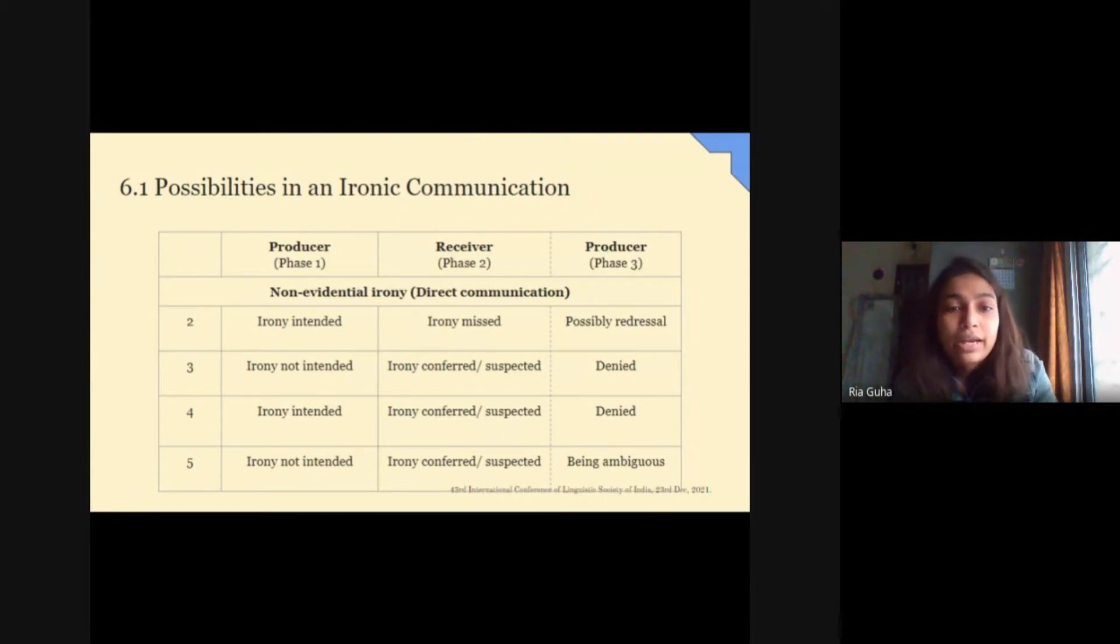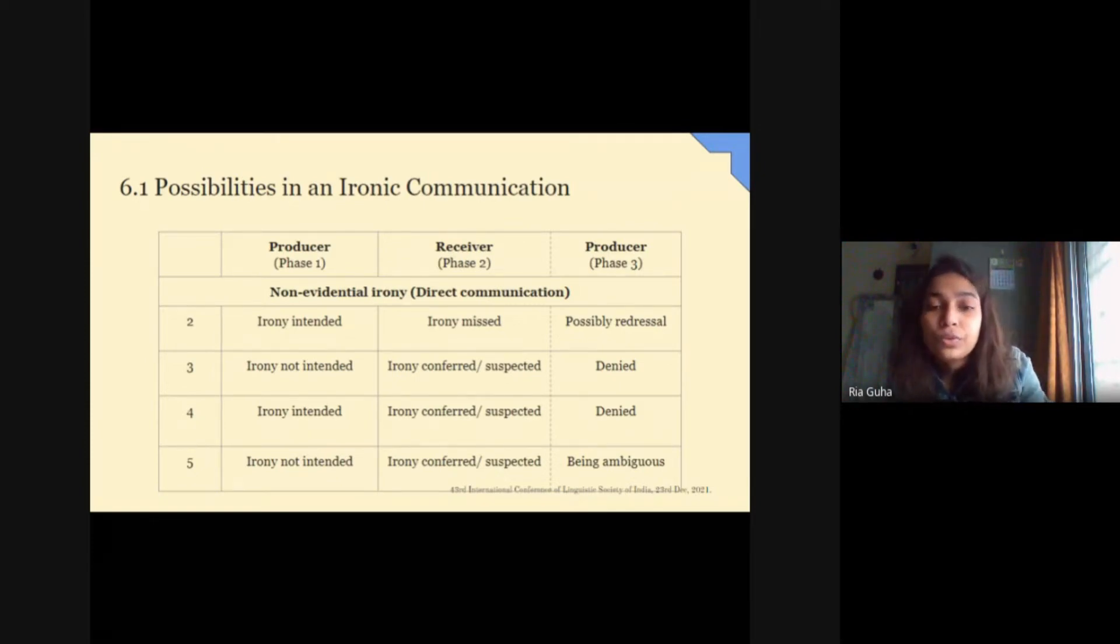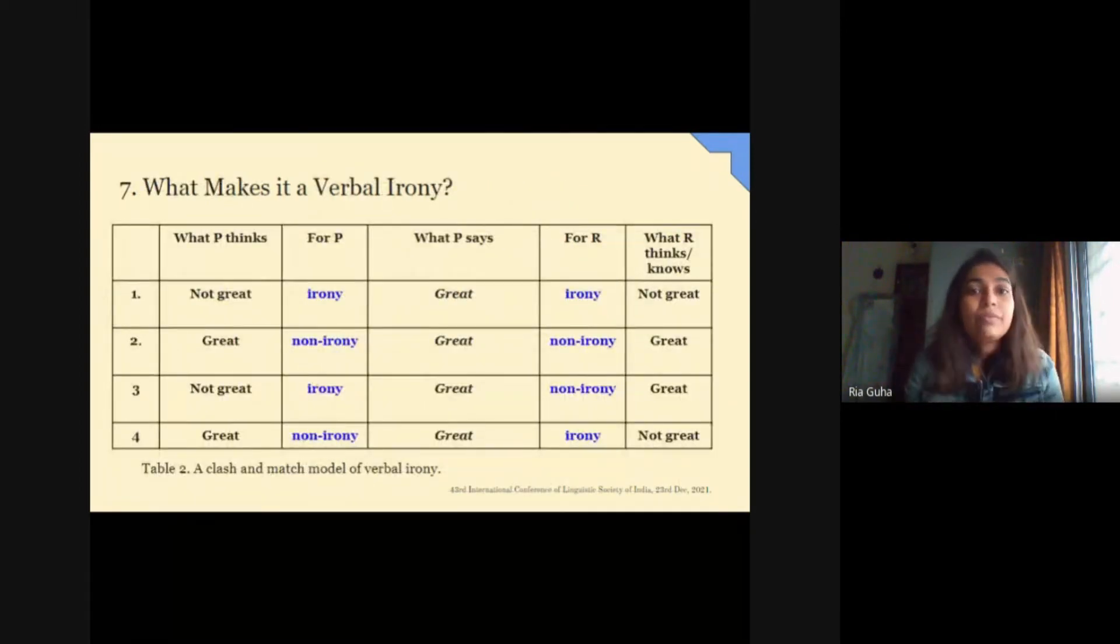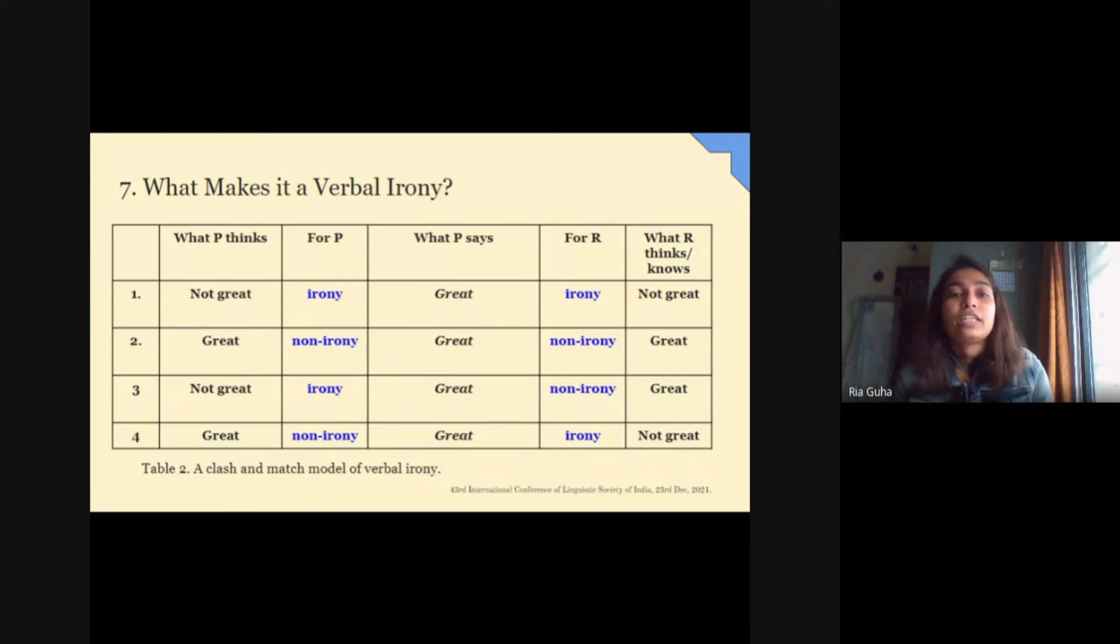5 is where in phase 3, the producer neither accepts it to be ironic nor denies it, saying it's up to you or whatever you think. Next, I have proposed here a model of clash and match to explain how it becomes a verbal irony for both the producer and the receiver.